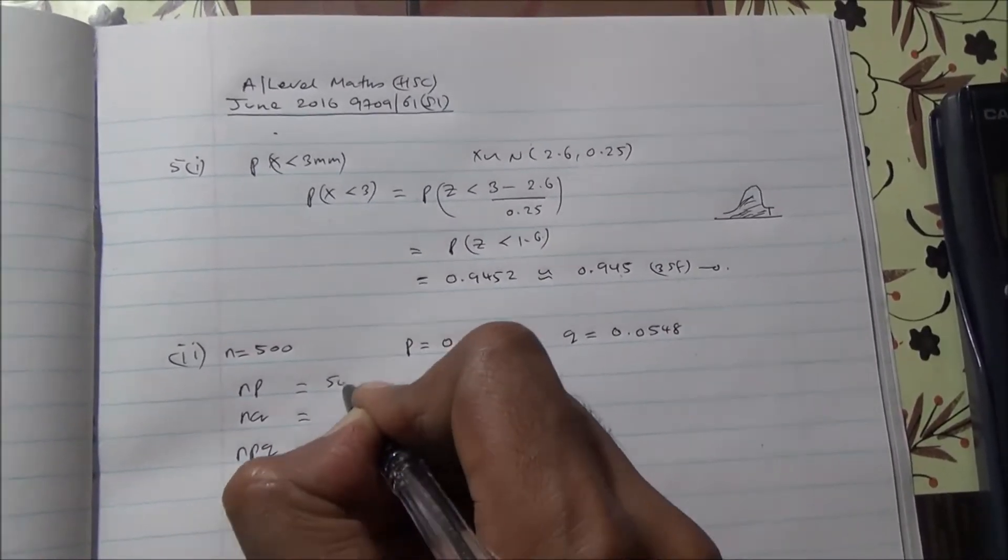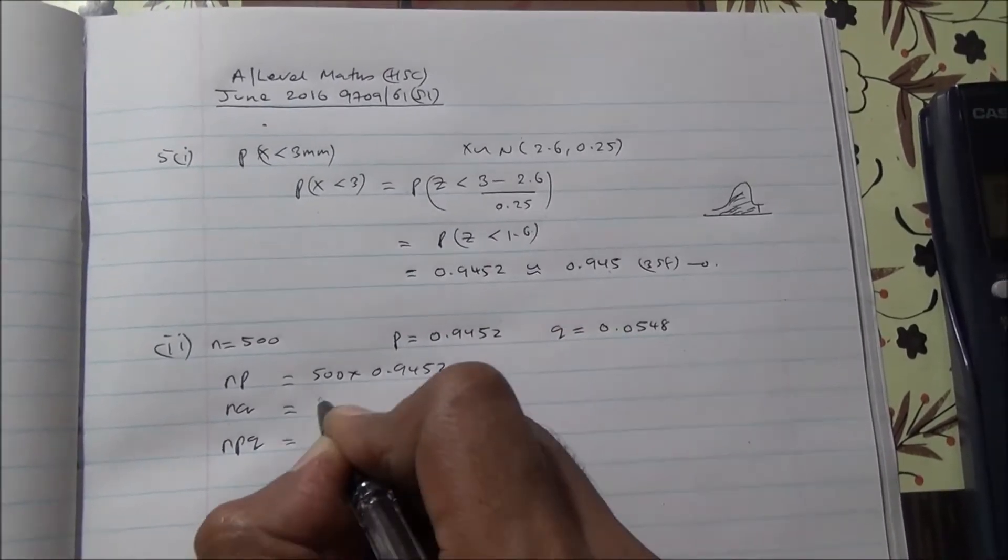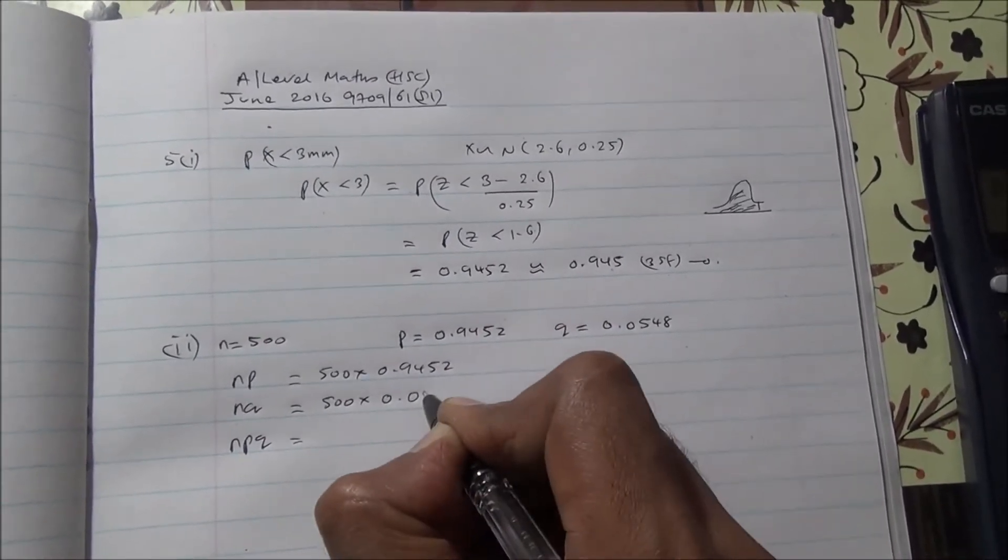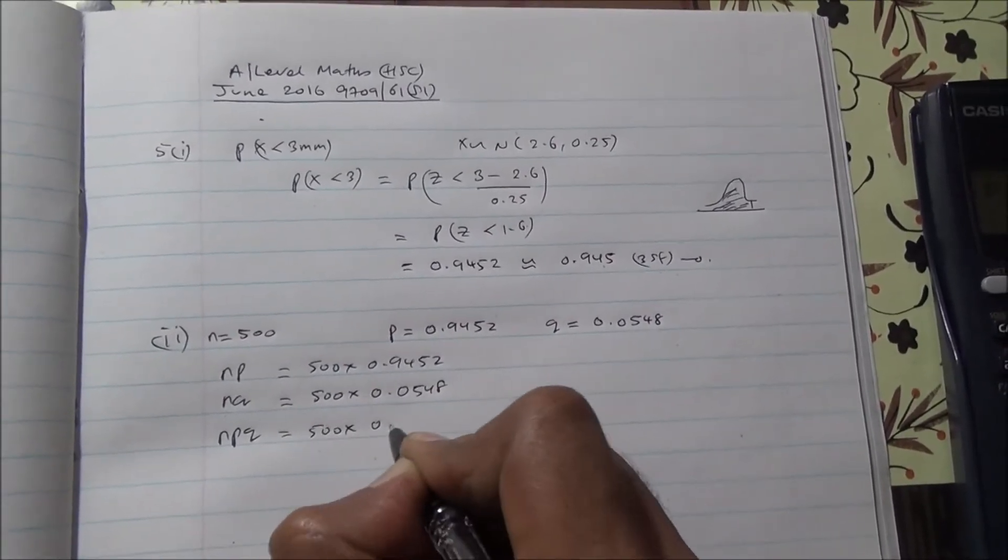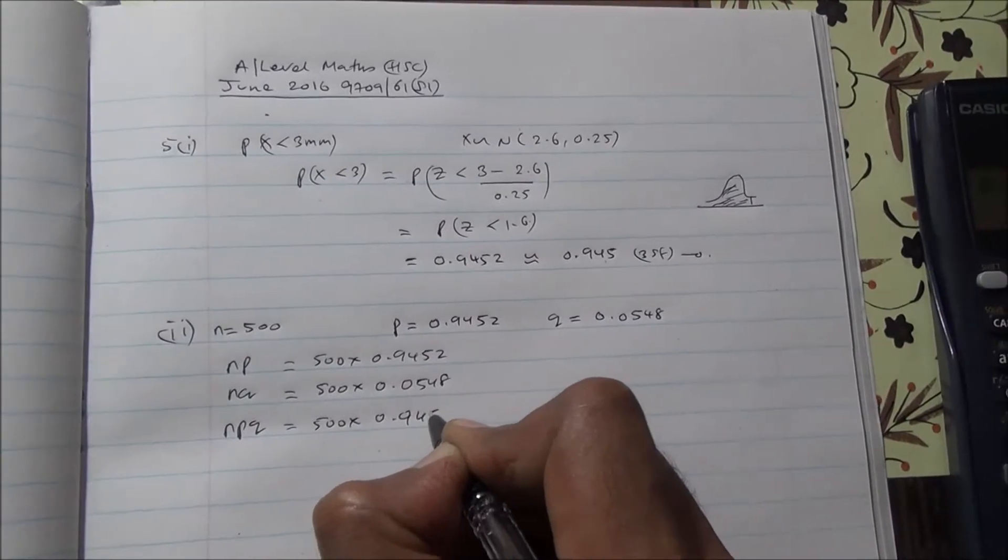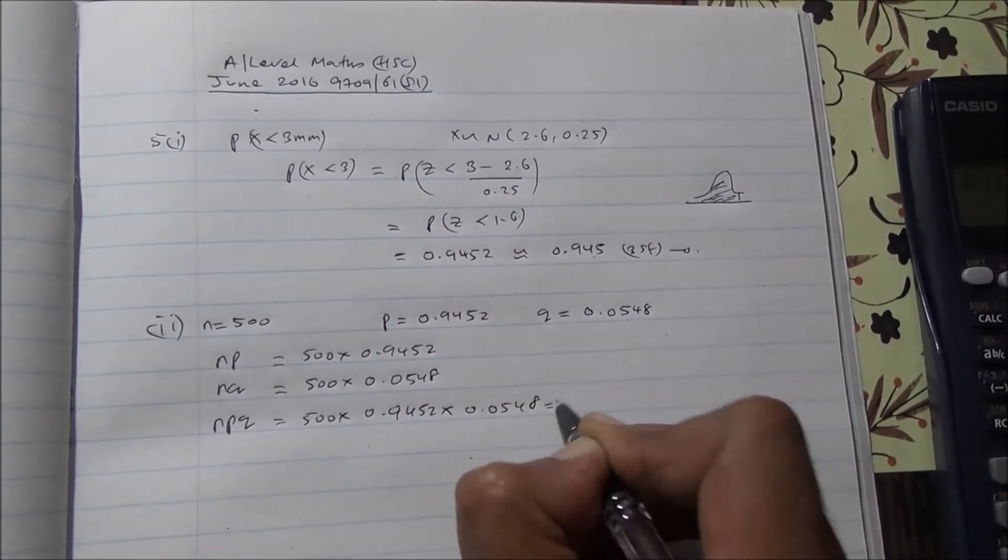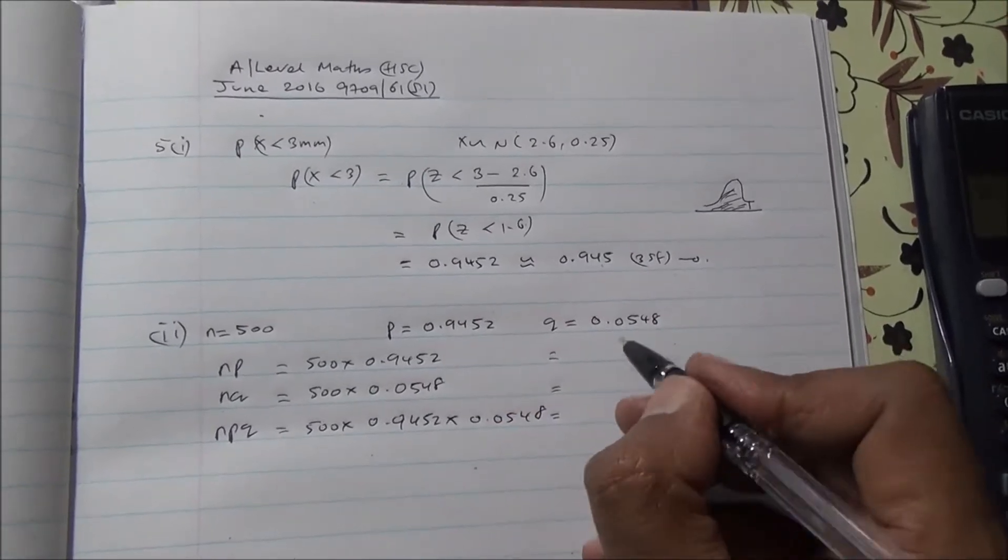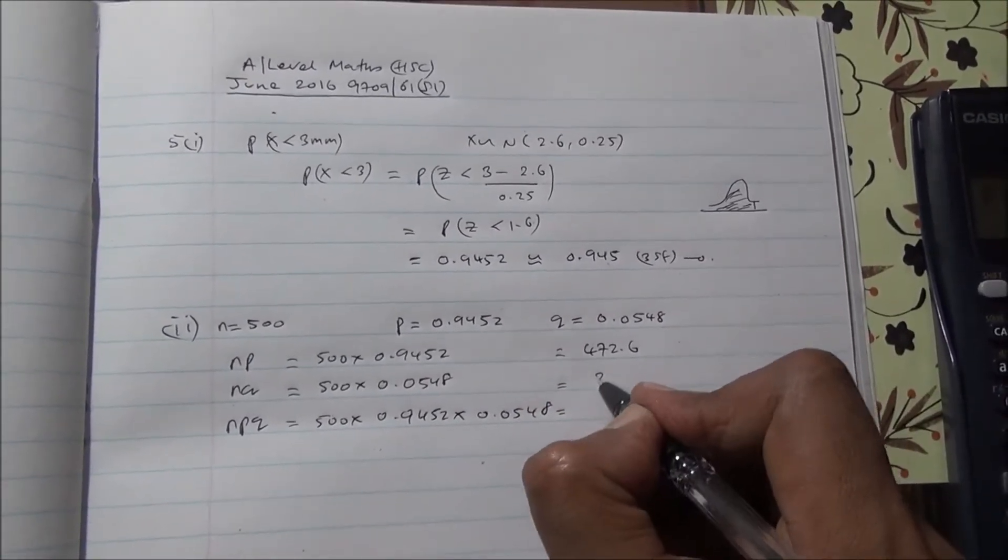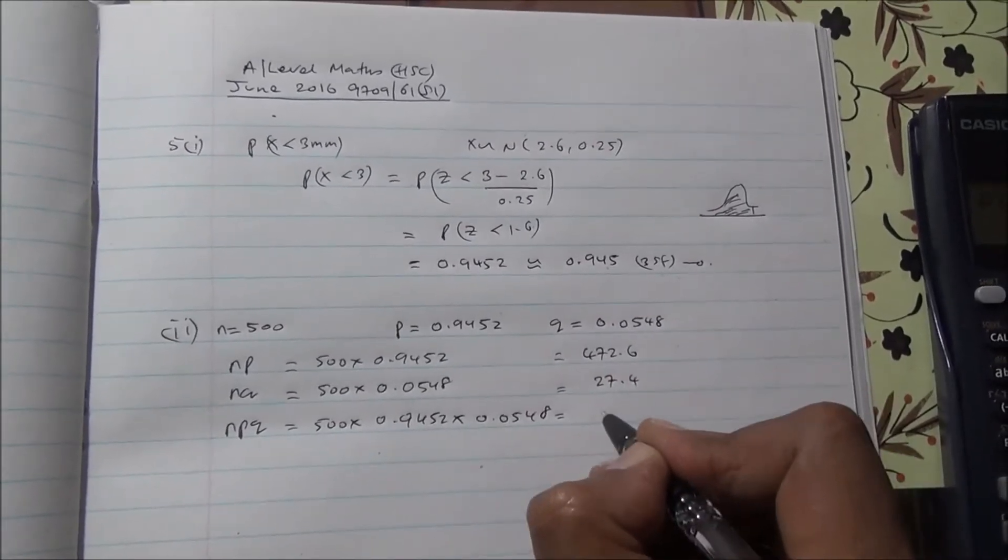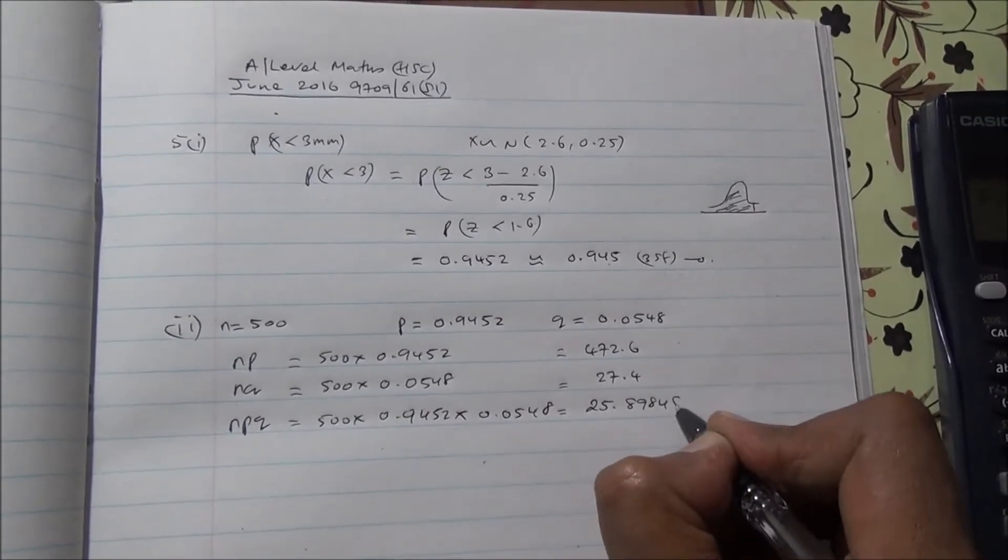What is NP? It's 500 times 0.9452. NQ is 500 times 0.0548. And NPQ is this much. This is going to be 472.6, this is 27.4, and this one's 25.89848.